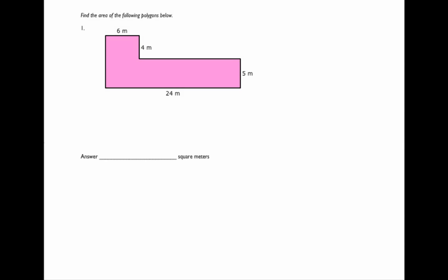We're going to find the area of these irregular polygons. Basically, these polygons are made up of rectangles, and we just need to break up the shape into rectangles. The first step is to use the parallel lines to figure out the missing lengths that are not given to us. The question asks: find the area of the following polygons below.